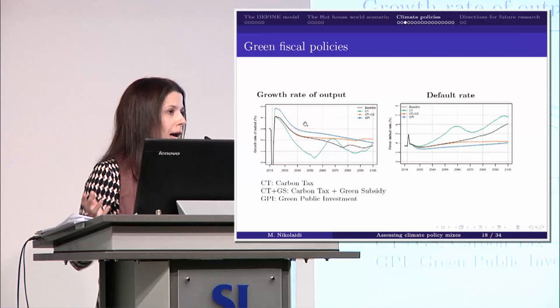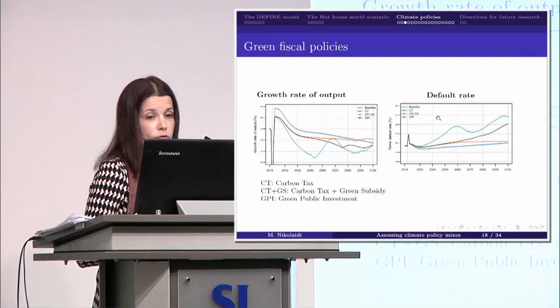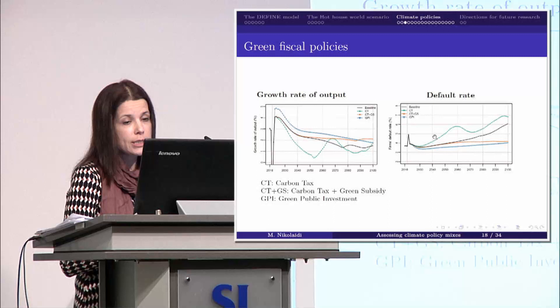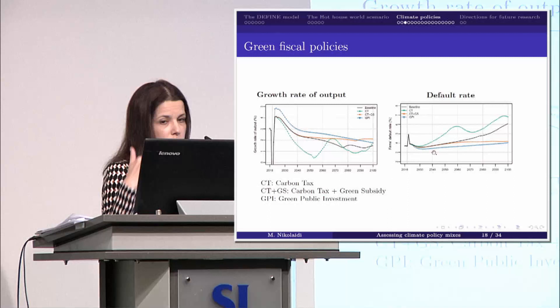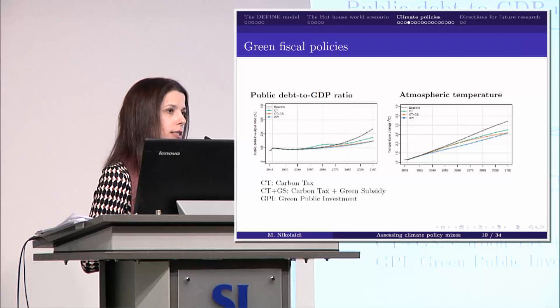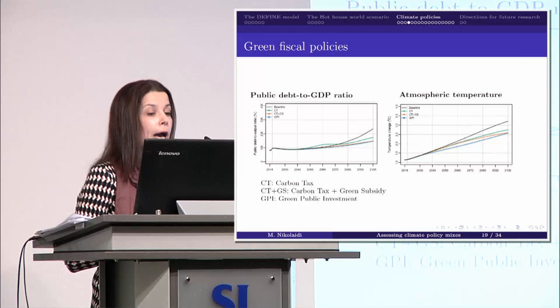When we have green public investment, we don't have any of this cyclicality. This is because green public investment directly affects economic activity. The default rate when we implement carbon taxes increases, which is in line with the climate Minsky moment that Emanuele mentioned before. When we have revenue recycling, we don't see something similar. With green public investment, the default rate actually becomes lower compared to the baseline. When we have carbon taxes, at the beginning we have an improvement in fiscal deficit; however, the decline in economic activity overcompensates this positive effect.